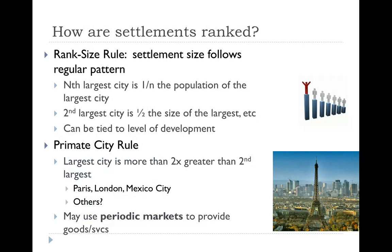We can also rank settlements using Central Place Theory. The rank size rule states that settlements follow a regular pattern: the nth largest city is one-nth the population of the largest city. So the second largest city is half the size, the third largest is one-third, and so on. This pattern tends to appear in more developed nations. In contrast, a primate city is one with a population more than two times greater than the second largest city — examples include Paris in France, London in the UK, and Mexico City in Mexico.